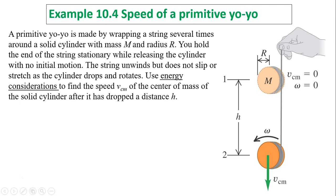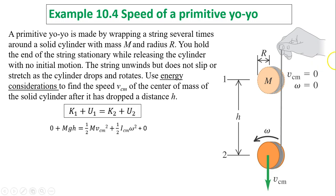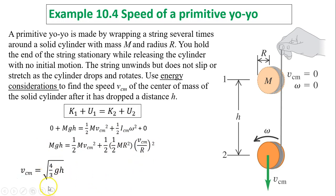Example: A primitive yoyo is made by wrapping a string several times around a solid cylinder with mass M and radius r. You hold the end of the string stationary while releasing the cylinder with no initial motion. The string unwinds but does not slip or stretch as the cylinder drops and rotates. Using energy conservation to find v center of mass after dropping height h: K_1 equals 0, U_1 equals mgh, K_2 is the sum of translational and rotational kinetic energy, and U_2 equals 0. Since the yoyo is a cylinder, I_cm equals one-half mr squared, and because it rolls without slipping, omega equals v_cm over r. Substituting gives v center of mass equals the square root of four-thirds gh.